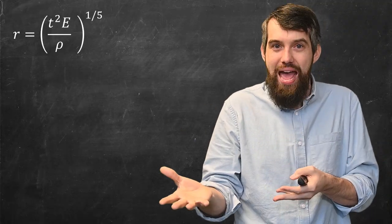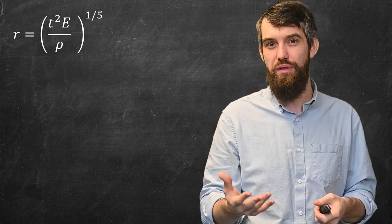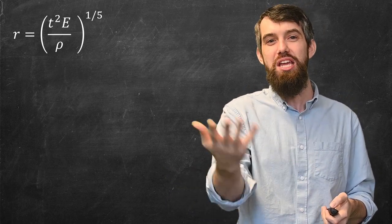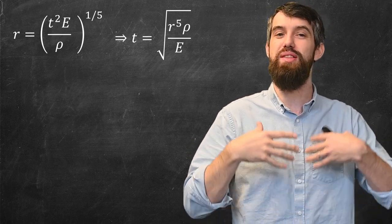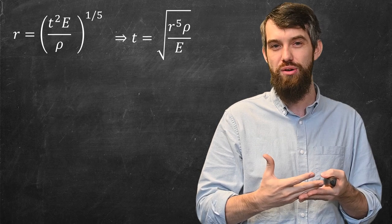Well, it turns out that it's remarkably accurate. Indeed, if you look at this formula we had where I put the coefficient of one out the front, then if you rearrange that for time, so I'm not doing anything, I'm just rearranging it for time, you get the square root of r to the fifth rho over the energy, then you can predict the time when the ancient astronomers would have seen this supernova.